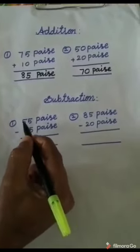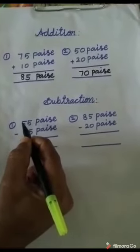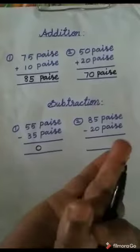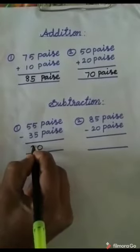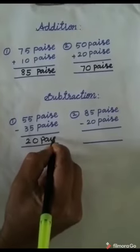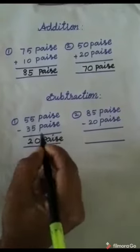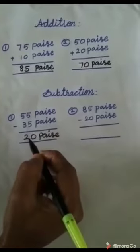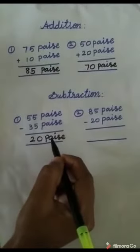Now we subtract the tens place. 5 minus 3. Close the fingers. 3 after 4, 5. Here write 2. Paisa, P-A-I-S-E, paisa. 20 paisa. 55 paisa minus 35 paisa equals 20 paisa.